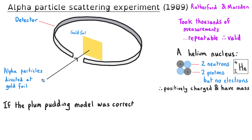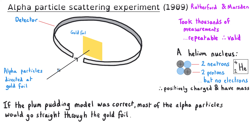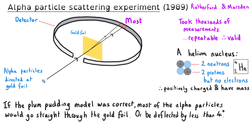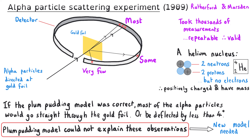If the plum pudding model was correct, most of the alpha particles would go straight through the gold foil, or change direction and be deflected by less than four degrees. The results were unexpected. Although most alpha particles did go straight through the gold foil, far more were deflected than expected, and by much more than four degrees. Even more surprisingly, about one out of every 8,000 was deflected by more than 90 degrees, and so was effectively deflected back in the same direction as the alpha particle source. Since the plum pudding model could not explain these observations, a new model was required.